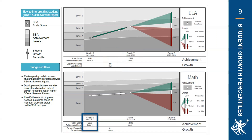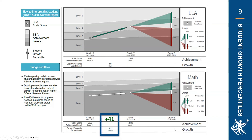That same student in grade six earned a 2399, or level one, on the math SBA. In grade seven, the student earned a 2440 — still level one — but had a 41-point scale score change. When compared to their cohort of academic peers for math, which is a different cohort than for ELA because it is based on prior academic performance in that subject, this student actually had typical growth, even though they did not change levels.